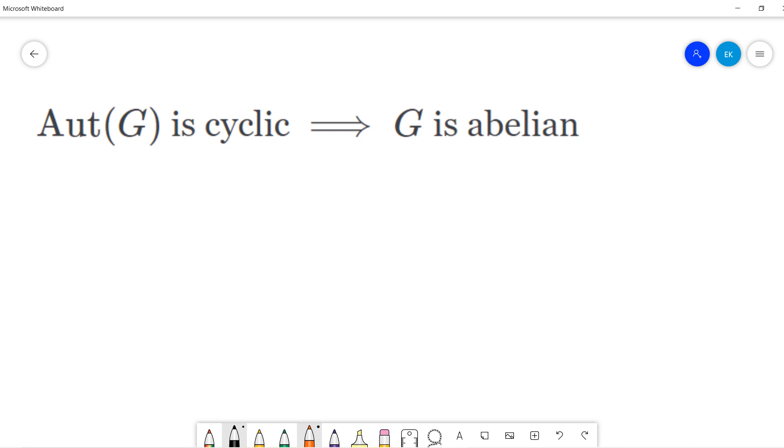Good morning, guys. Today we are proving this fact. G is a group. The fact is that if Aut(G) is cyclic, then G is abelian.